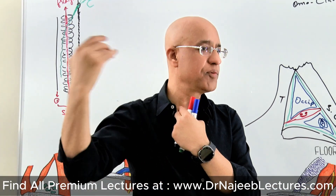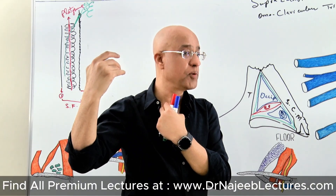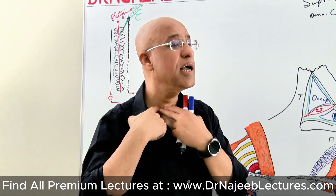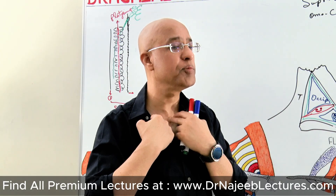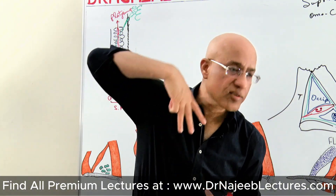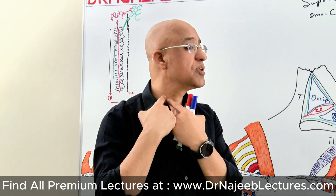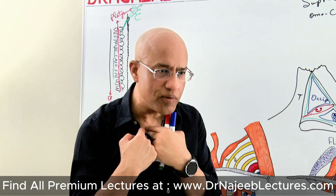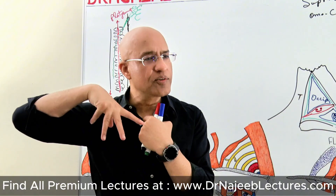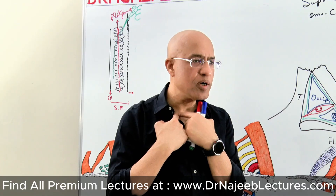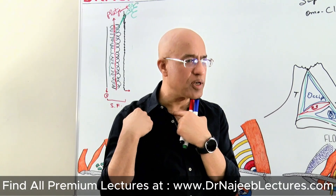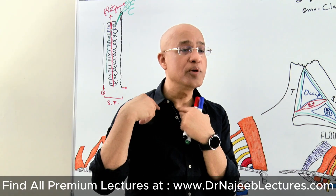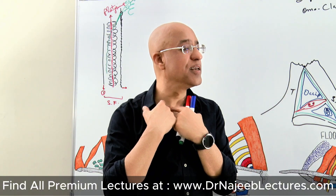After removing the skin and superficial fascia, within the superficial fascia you find the platysma muscle and a very special nerve. This nerve descends in the superficial fascia and divides into three branches — one medial, one intermediate, one lateral — spreading over the clavicle like a fan. These are called the supraclavicular nerves: medial supraclavicular, intermediate supraclavicular, and lateral supraclavicular. They are cutaneous sensory branches responsible for sensation over the collar bone.